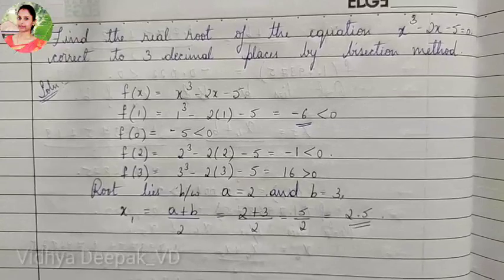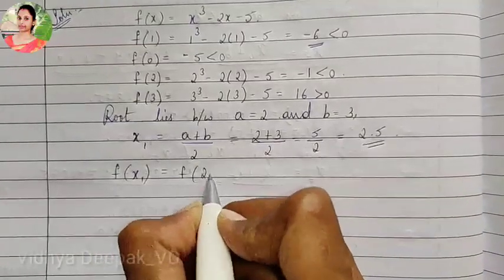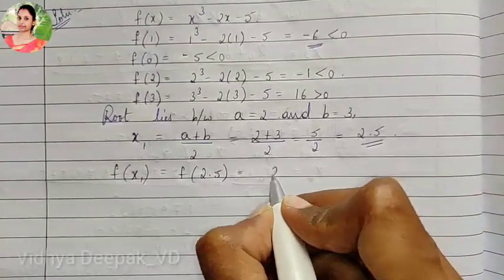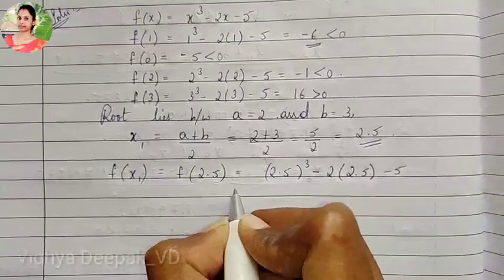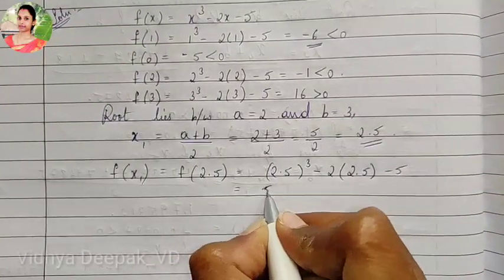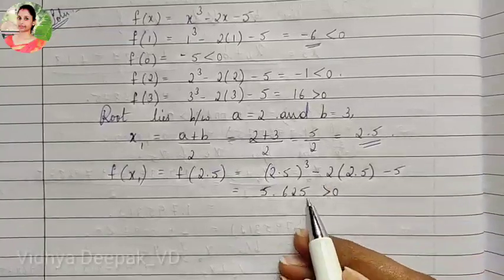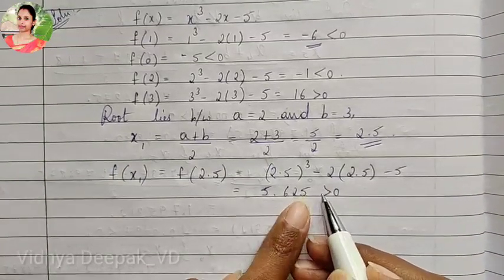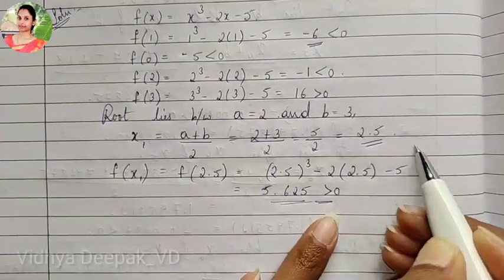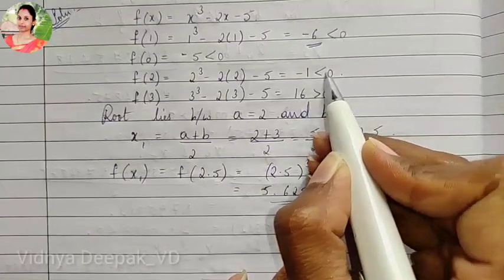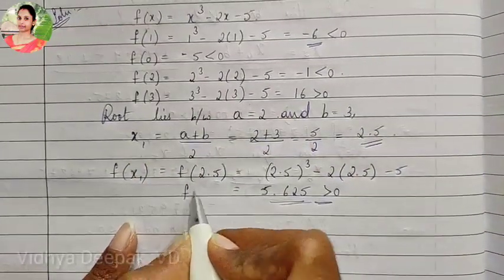Now we find f of x1, which is f of 2.5: 2.5 cube minus 2 into 2.5 minus 5, giving 5.625, which is greater than 0. We compare this with the previous negative number. f(2.5) is positive and f(2) is negative, so the root lies between 2 and 2.5.